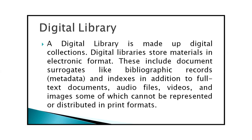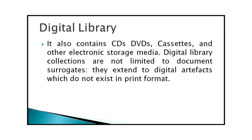From automated libraries, we move to digital libraries. A digital library is made of digital collections. Digital libraries store material in electronic format, including document surrogates like bibliographic records and indexes, as well as full text documents, audio files, videos and images — some of which cannot be represented or distributed in print format. Digital libraries also include CDs, DVDs, cassettes and other electronic storage media. Digital library collections extend to digital artifacts which do not exist in print format.